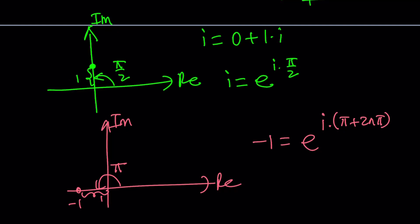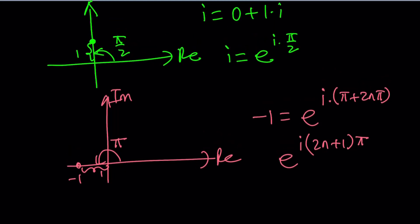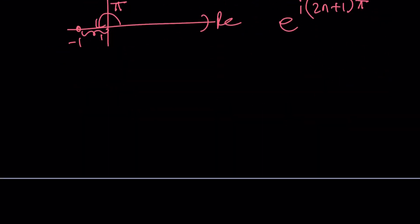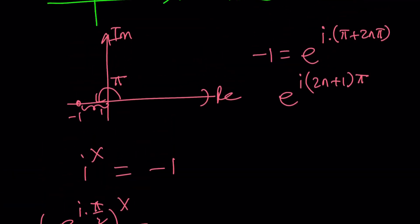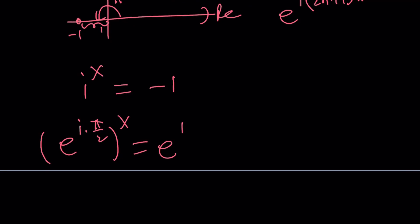because we have to write it in the general form. But guess what? This can also be written as e to the power i times 2n plus 1 pi. In other words, we're looking at odd multiples of pi, and that will give you negative 1. Let's go ahead and plug it in and see what happens. We have i to the power x equals negative 1. Replace i with e to the power i pi over 2 and raise it to the power x.